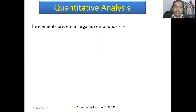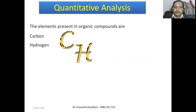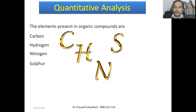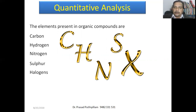In quantitative analysis, we are mainly measuring the elements present in an organic compound quantitatively. The main elements present in a compound — mainly in hydrocarbons — are carbon, hydrogen, nitrogen, sulfur, and halogens. Halogens are bromine, chlorine, and iodine — these can be estimated easily; fluorine is difficult with simple methods. Then phosphorus — a small amount of phosphorus may also be present in organic compounds. These elements' quantitative analysis are discussed here.